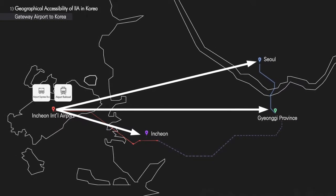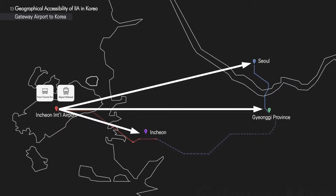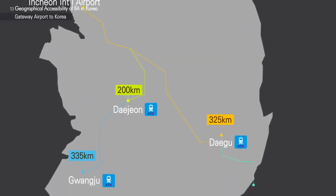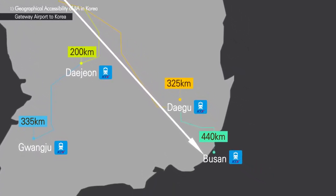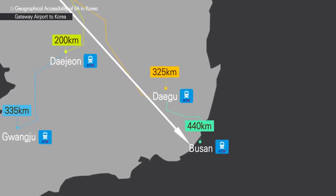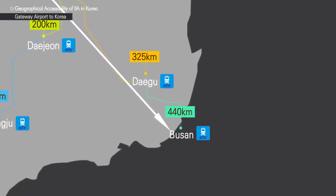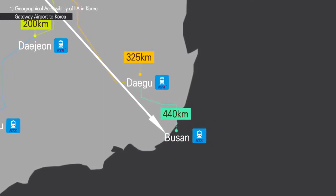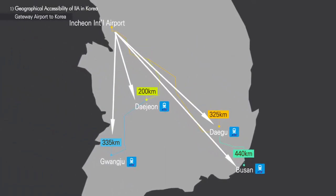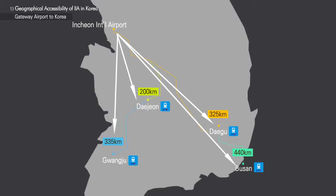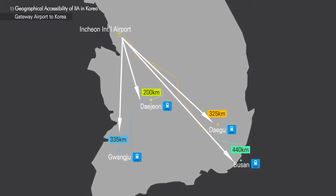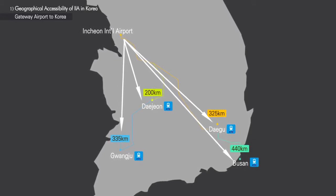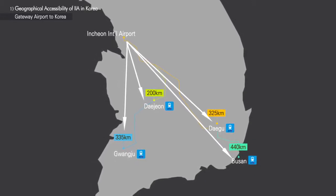the majority of international travelers use Incheon International Airport. The furthest major city from Incheon International Airport is Busan, located at a distance of roughly 440 kilometers by road transportation, and connected to Incheon International Airport by Korea's express train, the KTX. Other major cities are located closer and also have express trains that connect directly to Incheon International Airport or to Seoul Station where passengers can take the express airport rail.